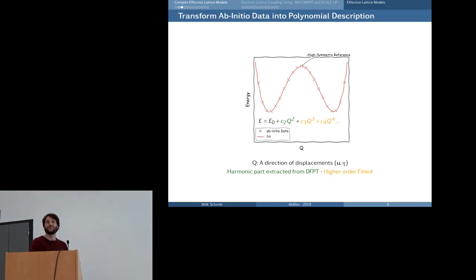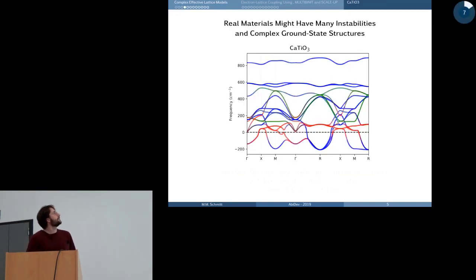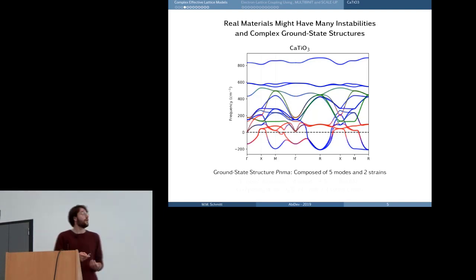Now, if you look just in one dimension this seems very straightforward, but then if you look at real materials, how does the situation present itself? If you look at the reference that we want to develop our model around, for example calcium titanate would be the cubic perovskite phase. So we look at the phonon band structure and what we see is that we have many, many, many instabilities all over the Brillouin zone. So we will have to create a potential that tracks all these instabilities correctly. And then when we look at the ground state structure of calcium titanate, we see that in that phase, which is PNMA symmetry, there are five different condensed modes which might contain multiple atomic displacements and two different strains.